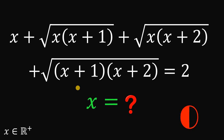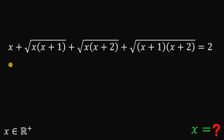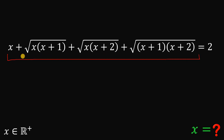And now let's answer this question together. The question is to solve for the real value of x that satisfies this equation: x plus square root of x times (x plus 1), plus square root of x times (x plus 2), plus square root of (x plus 1) times (x plus 2), equals 2. So how do we answer this kind of question?